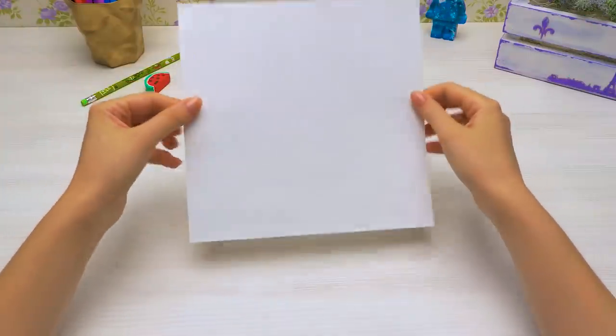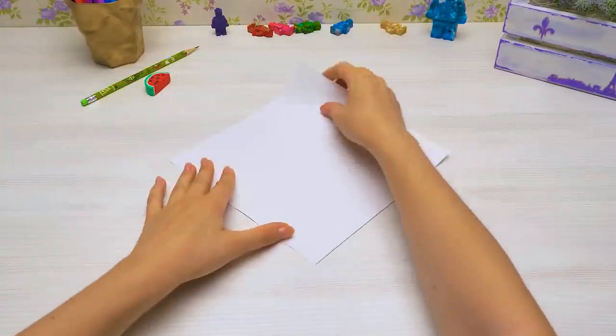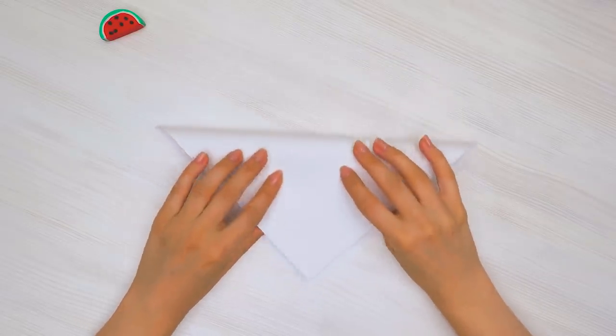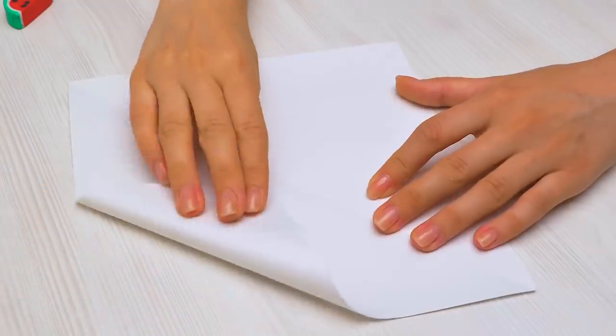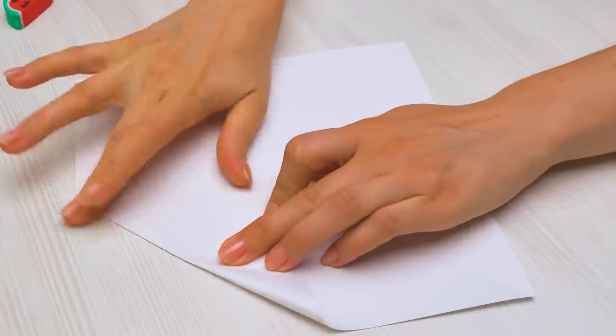For the next drawing, we're going to need this square piece of paper. Let's fold it in half on two sides. Now, let's fold four corners into the middle, like this.